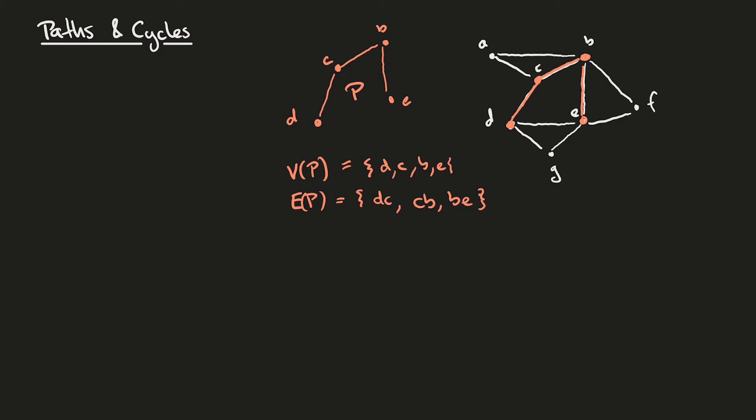Notice that in this case, our subgraph doesn't intersect itself, which means that every vertex in the path has either degree one or degree two. This is a condition we'll want to always enforce when we talk about paths. There's another notion of traversing a graph where we are allowed to intersect ourselves and that's called a walk, and we'll see walks later on.